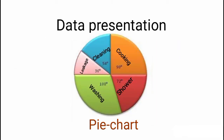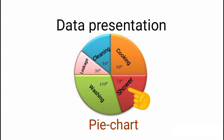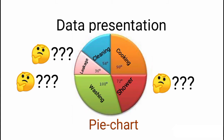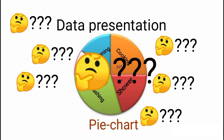This chart shows the usage of water in a house: 180 degrees for washing, 90 degrees for cooking, 72 degrees for shower, 54 degrees for cleaning, and 36 degrees for leakage. This pie chart describes the water usage in a house well enough that you need no further explanation. But the question still remains — how can we draft a pie chart?